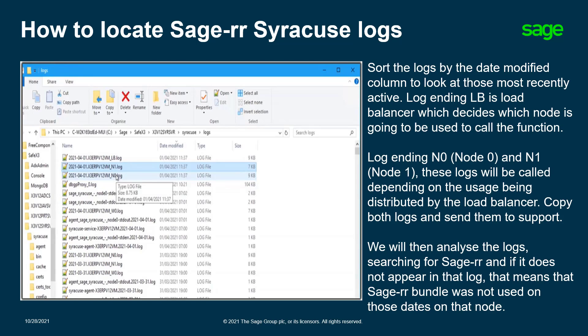But where do we retrieve these logs from? First, you will need to connect to the Syracuse server, after which you can navigate to the Syracuse directory to retrieve the logs. This is illustrated in the folder path in our screenshot. Once you are here, you can proceed to sort the logs by the date modified to bring those logs most recently active to the top. Look for the logs ending in N1 or N0. Depending on the usage being distributed by the load balancer, you may need to take a copy of both files for analysis.